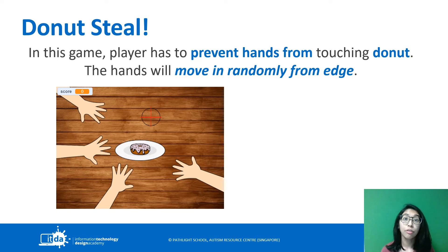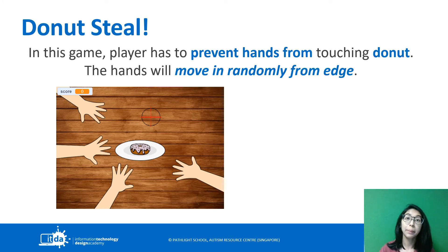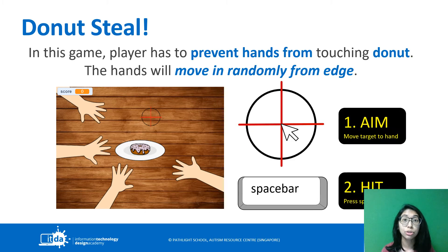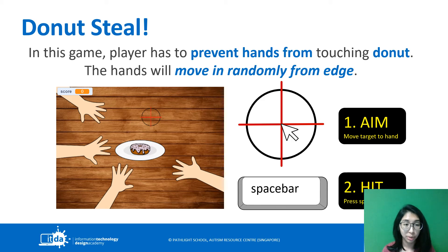The hands will move randomly from the edges of the screen, so that has to be coded. Something special for today's game: to stop the hands from catching the donut, we need to do an aim and a hit code. First, you need to move your target sprite to the hand using your mouse, and then press the spacebar to hit the hands.